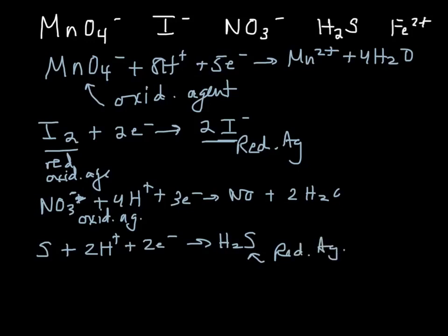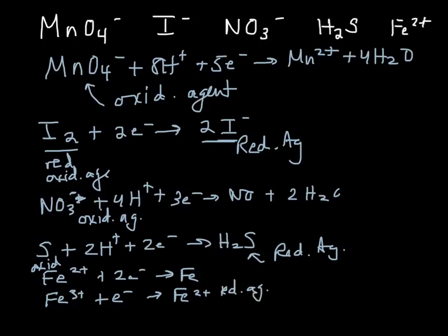Now, interestingly enough, you're going to find two half reactions for Fe2+, because Fe2+ can gain two electrons and become Fe, but it can also be produced by Fe3+ + e- gives me Fe2+. So Fe2+ can be both an oxidizing agent in this case, or a reducing agent in this case. So what we're going to do on the next page is list all of our oxidizing agents and reducing agents and see if we can rank them.